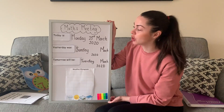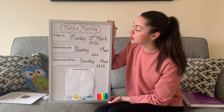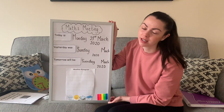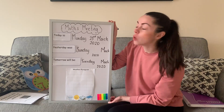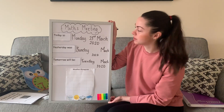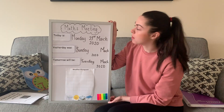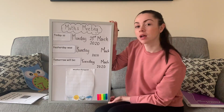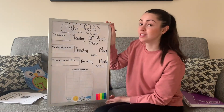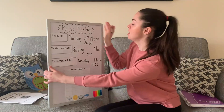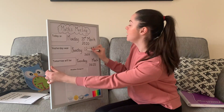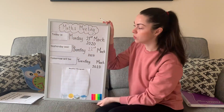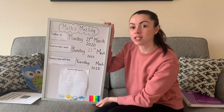Now, yesterday was Sunday the 22nd of March 2020. Can you have a little think about what date yesterday was? So if today is the 23rd of March, what date was yesterday? Yesterday was Sunday the 22nd of March 2020. I want you to say that full sentence for me now.